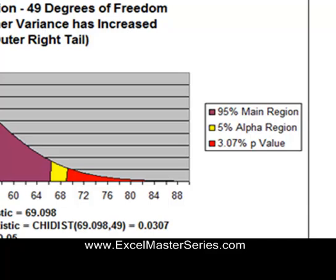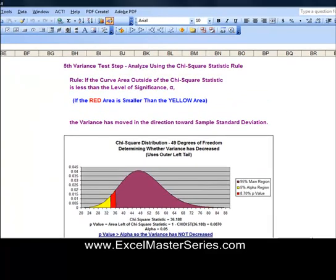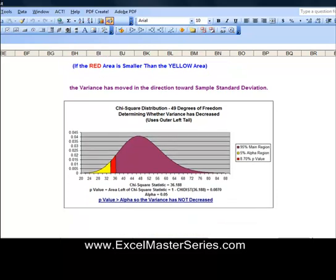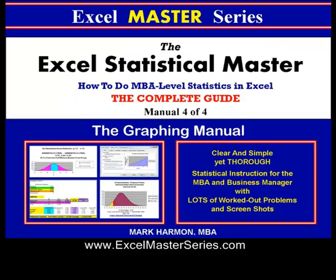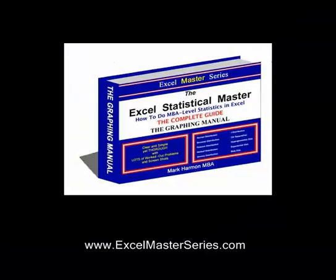Applying the rule, that 3% red area fits inside the 5% yellow area (the alpha level of significance). So we can say within 95% certainty that the variance has increased. On the other hand, if we were testing whether variance decreased, the red area does not fit inside the yellow area, so we cannot say the variance decreased. If you'd like to be an Excel statistical master, check out thexlmasterseries.com where you can download the four-manual series — 400 pages of MBA-level statistics.